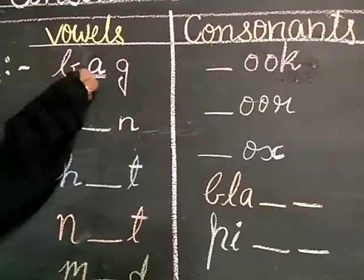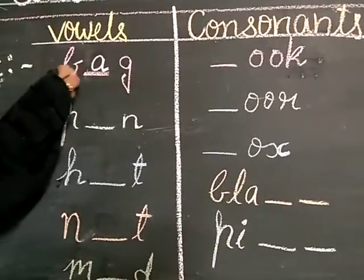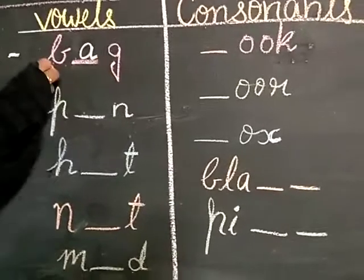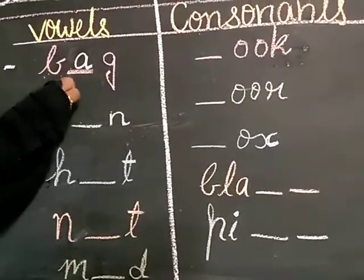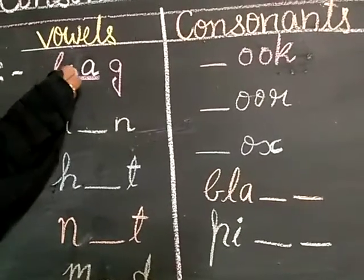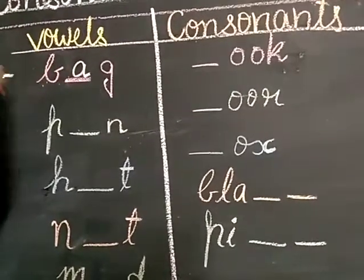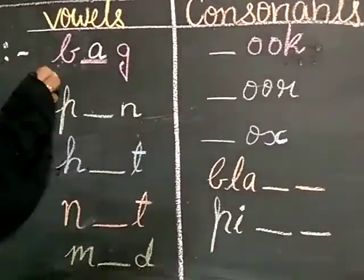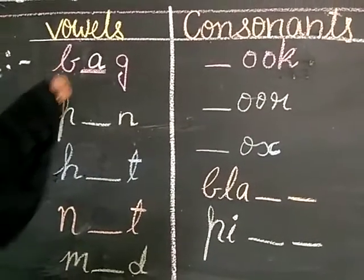Now, you can see here, B-A-G, bag. Here it comes B-I-G, big. B-U-G, bug. B-E-G, beg. So, whatever vowels will come, if you add, it gives complete meaning. New word and different meaning.